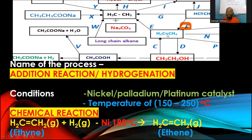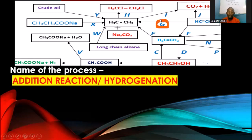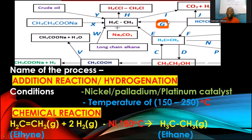Process G — from ethyne with a triple bond all the way to ethane with a single bond — is also hydrogenation, but using two moles of hydrogen gas. Process G is essentially the sum of processes F and E: one mole of H₂ converts ethyne to ethene, then another mole of H₂ converts ethene to ethane. The conditions and catalyst are the same.